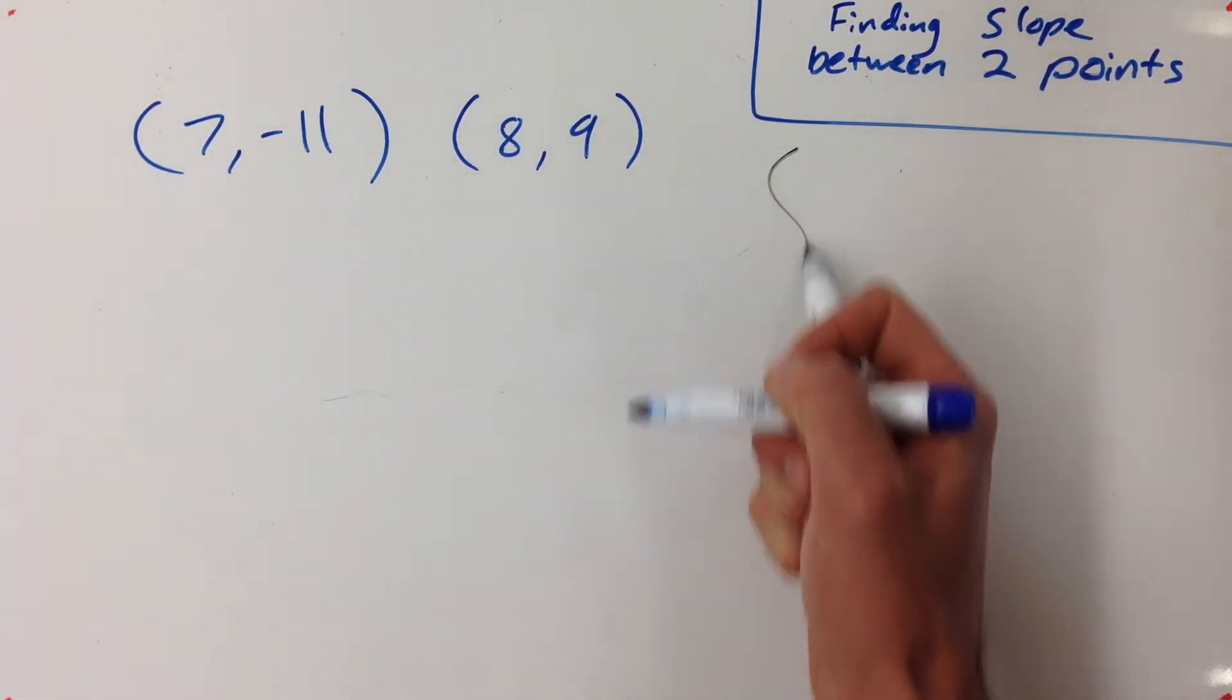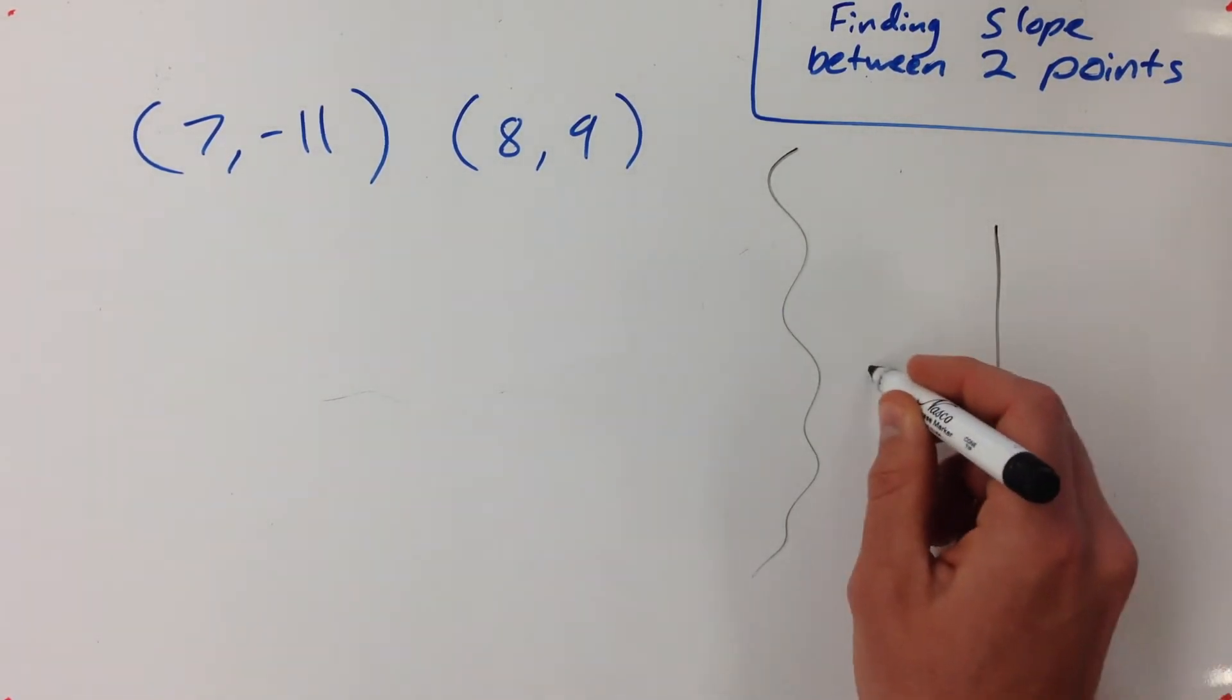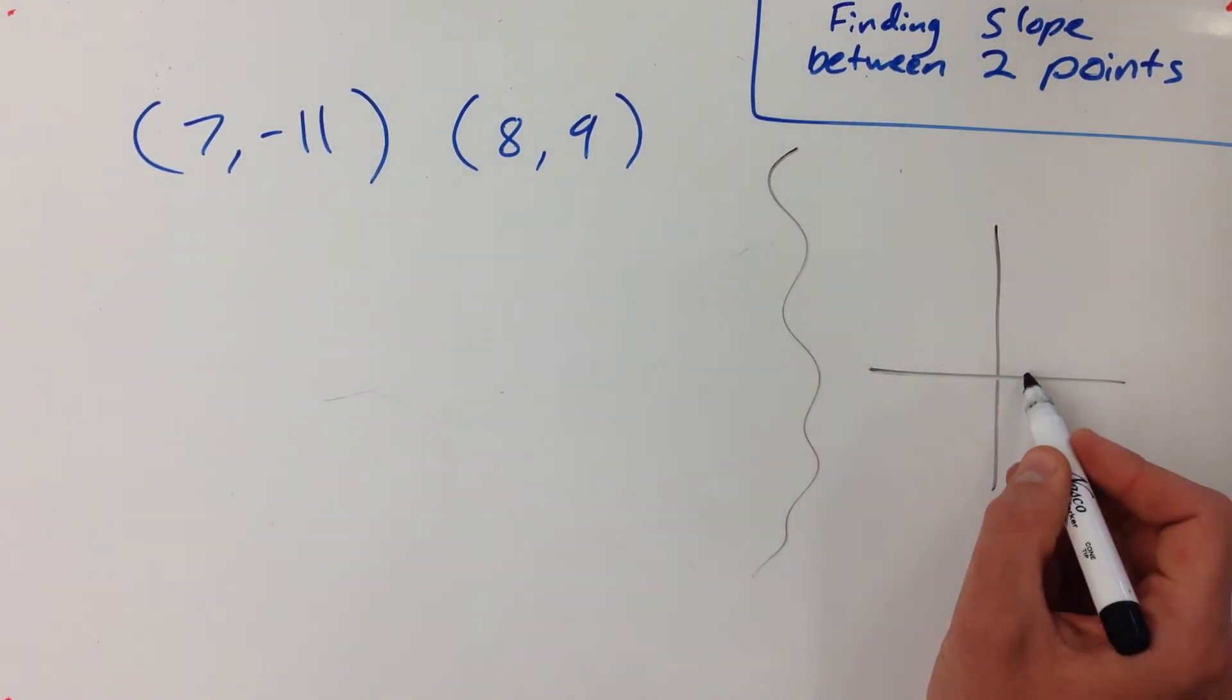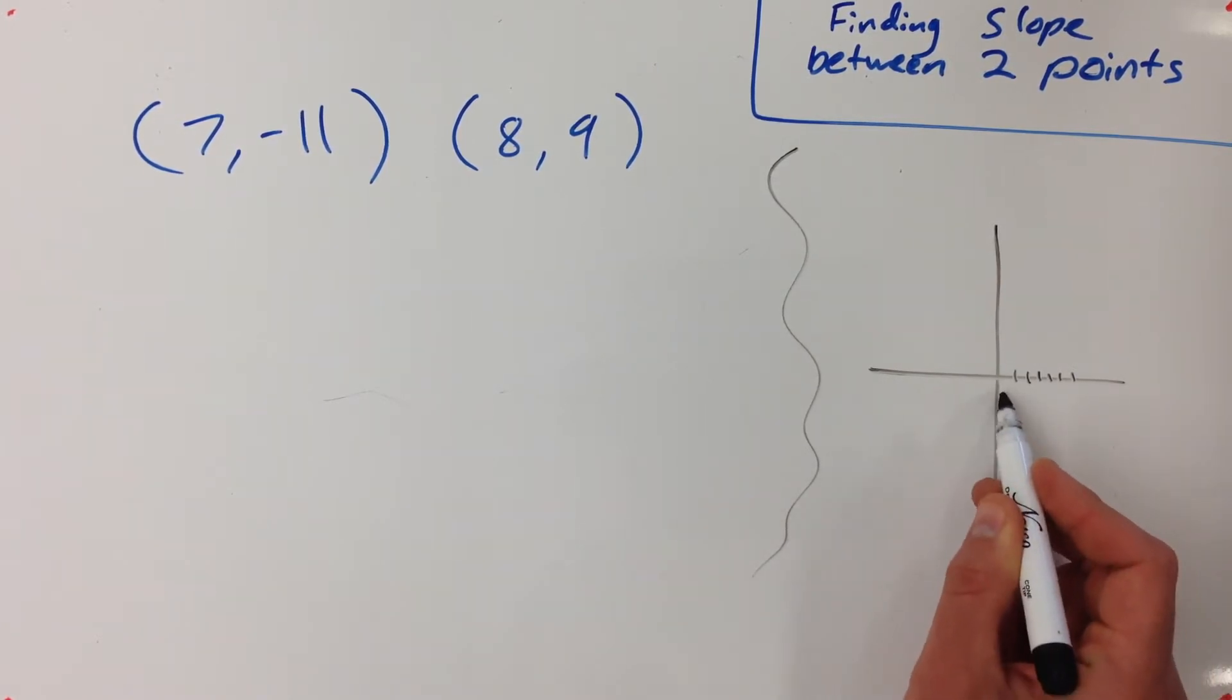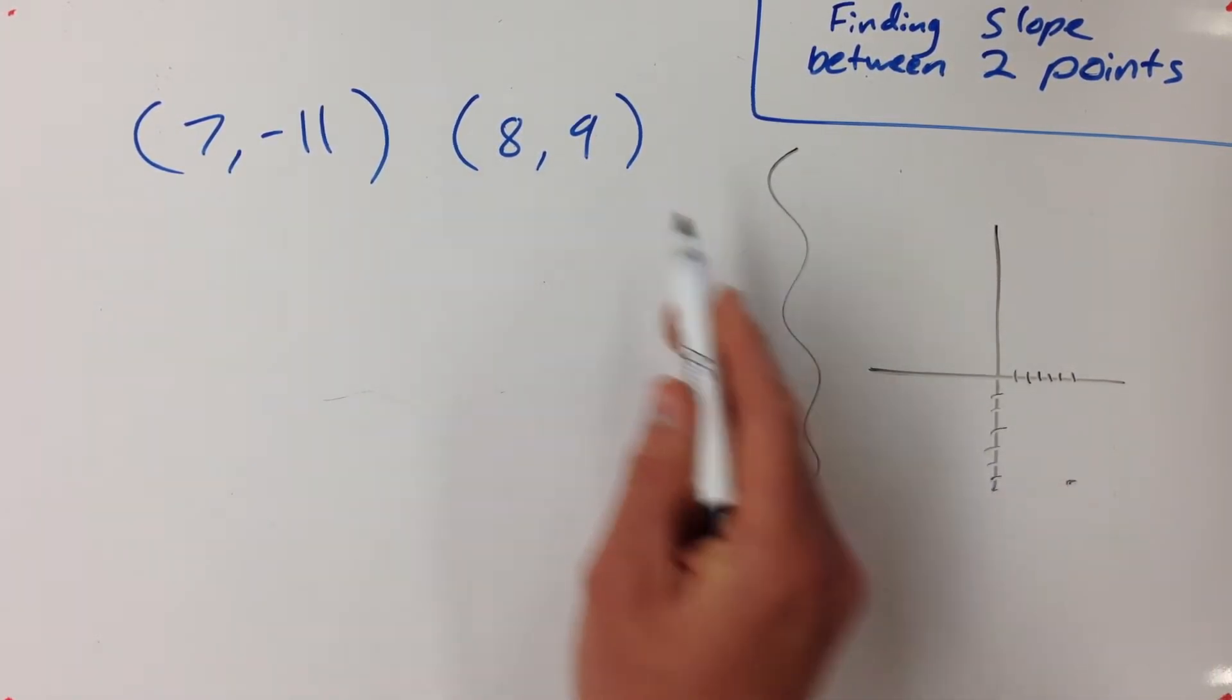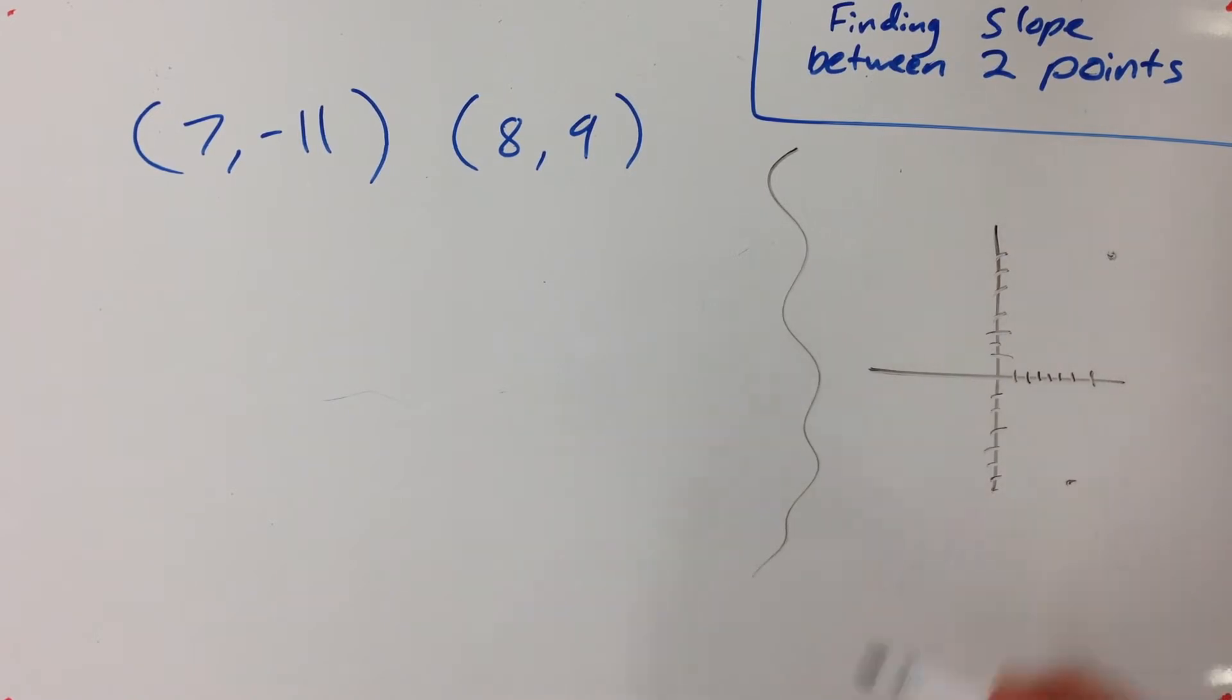I mean I could always go back to the old way of thinking, right? Where I have a graph. Seven, negative eleven is like seven over and down eleven. Way down there. And eight, nine is eight over and up nine.